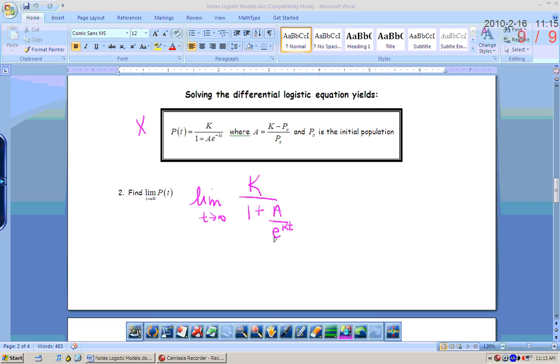I would have big K over 1 plus A over e to the kt. As t approaches infinity, what's happening to e to the kt? It's getting bigger and bigger. And so A, which is a constant, something that's constant over something that's getting bigger and bigger and bigger, is going to approach zero. So that whole term is going to approach zero. So this limit equals big K.